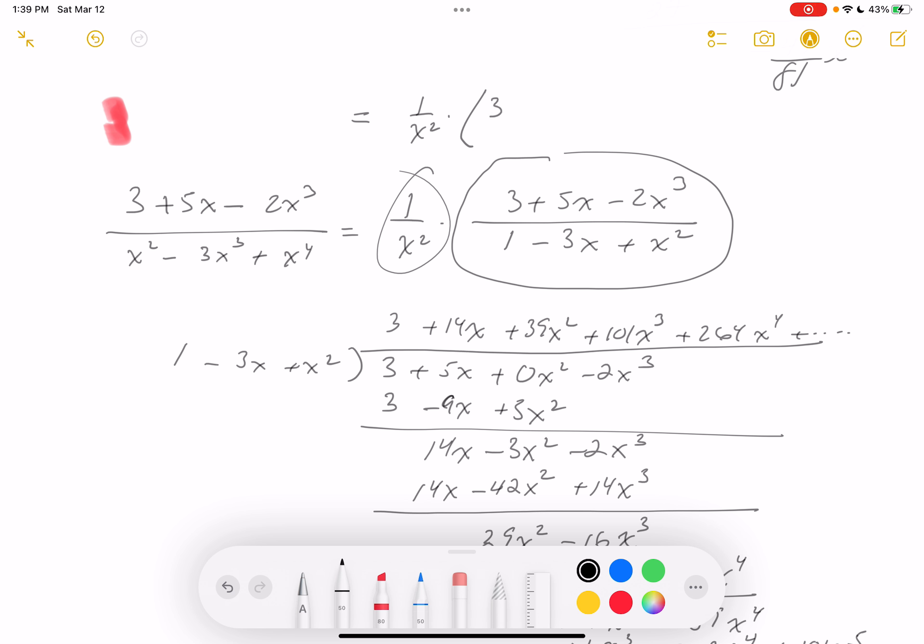Which is 3 plus 14x, we'll check the key later by the way, plus 39x squared plus 101x cubed plus 264x to the fourth, plus et cetera.